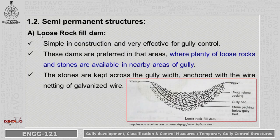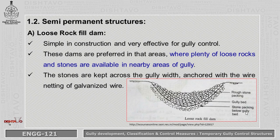Next are semi-permanent structures. These structures are semi-permanent and will remain in place for many years. First is the loose rock dam, which is very effective in gully control. These dams are preferred in areas where plenty of rocks and stones are available nearby. As shown in the diagram, a small trench is made in the gully and stones are placed so that water is stored. The stones are kept across the gully width and anchored with galvanized wire netting so they will not wash out during the rainy season.